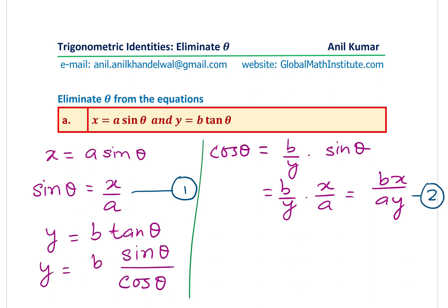So we get the second equation, which is cos theta. And now, as I was saying, we'll use the identity, which is sine square theta plus cos square theta is equal to one. So sine square theta means I could write this as x over a whole square plus cosine square theta means I could write this as bx over ay whole square equals to one. And this equation you find it is independent of theta. So we have eliminated theta from our equation.